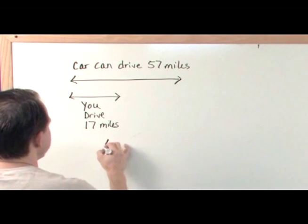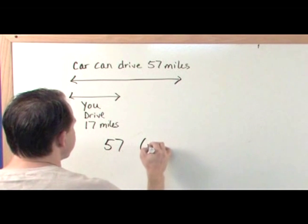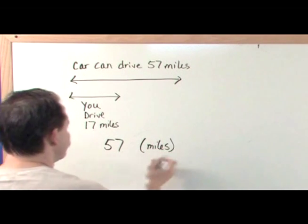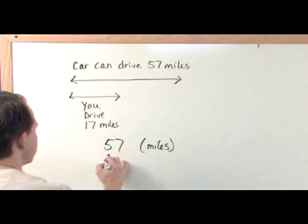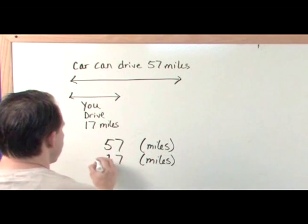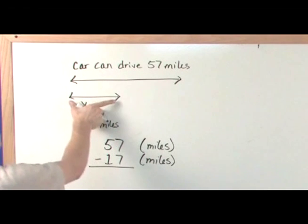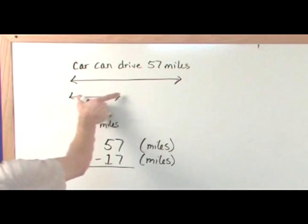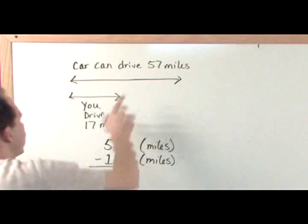So let's do that. 57 what? It's 57 miles. And you're subtracting 17 what? 17 miles. And you're doing this subtraction so that you can take off how much you've gone so you know how much farther you can go before you run out of gas.